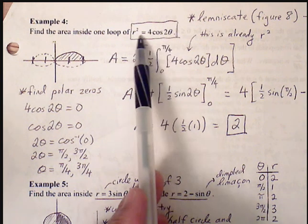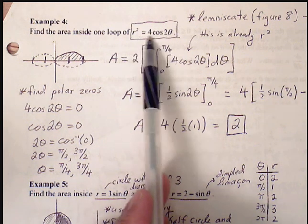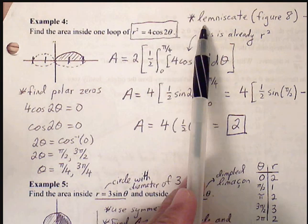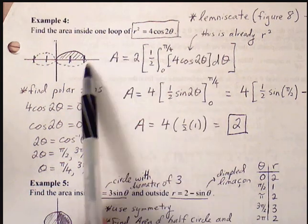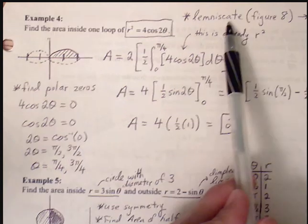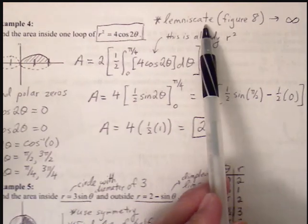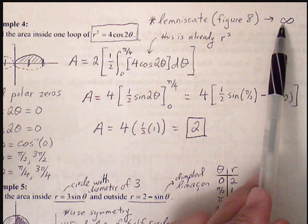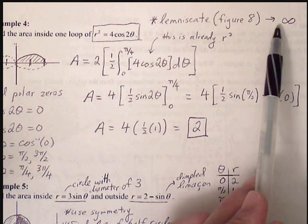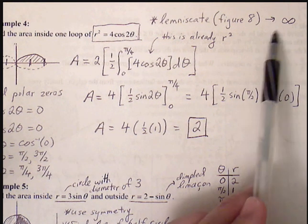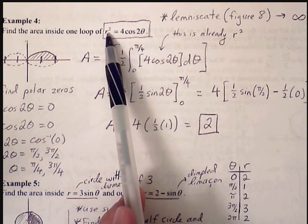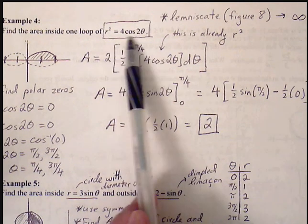This is the one type we haven't seen yet. This is going to be a lemniscate, and it creates a figure 8 — it can look like an infinity symbol, either right side up or sideways. This shape is produced when we have r squared equal to a given expression.